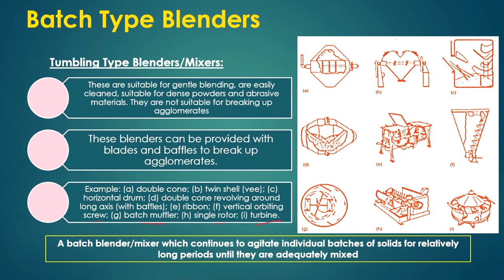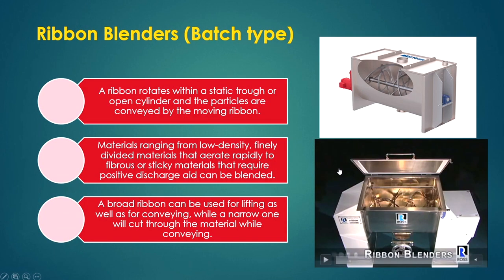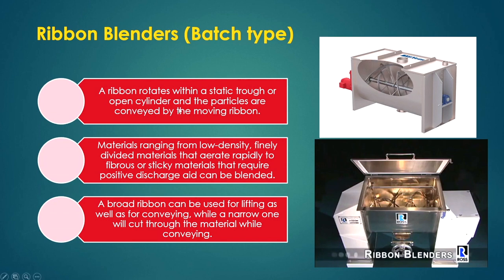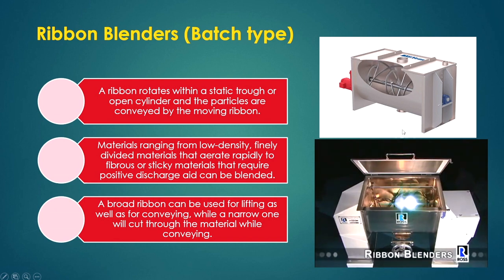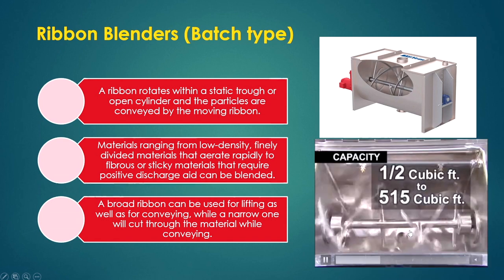A batch blender or mixer agitates individual batches of solids for relatively long periods until they are adequately mixed. In a ribbon blender, the ribbon rotates within a static trough or open cylinder, and particles are conveyed by the moving ribbon. Materials ranging from low-density, finely divided materials to fibrous or sticky materials that require positive discharge aid can be blended. A broad ribbon can be used for lifting as well as conveying, while a narrow one will cut through the material while conveying.